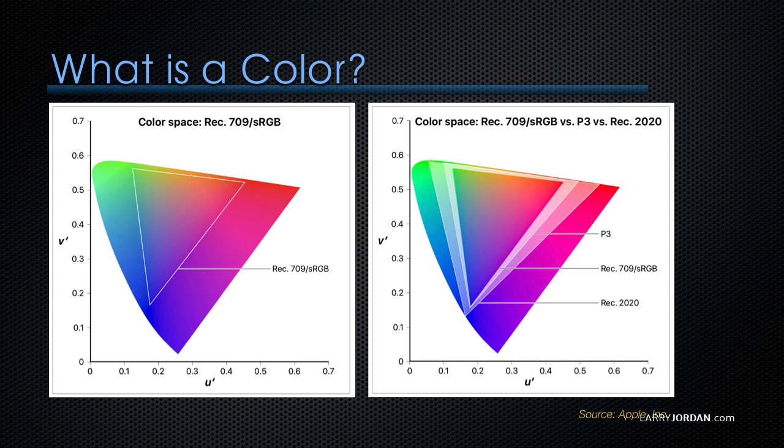Rec. 709 color space is the same as sRGB. On the right-hand side, we're seeing where we're going. The inner triangle is Rec. 709. The middle triangle is where we are now. This is DisplayP3.